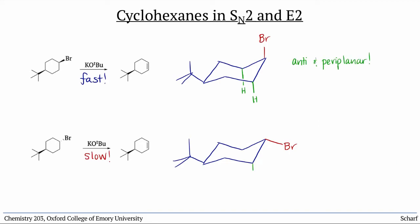But with the equatorial bromine, the only hydrogens are here and here, neither of which is anti. Without the required orientation of the H and the leaving group, the elimination can't occur.